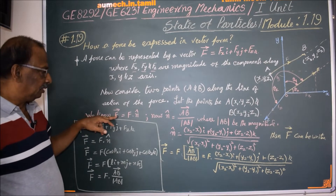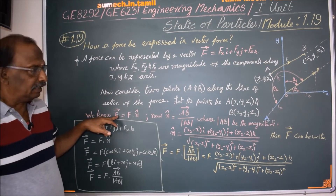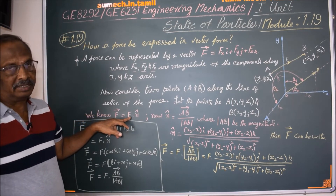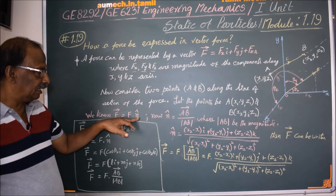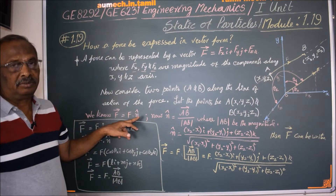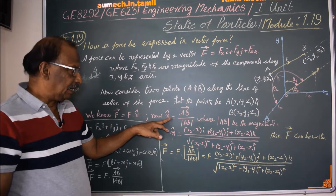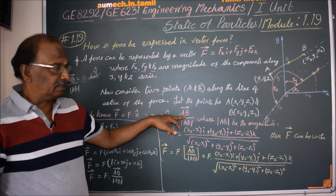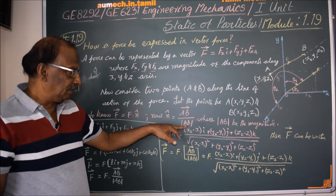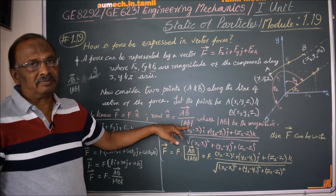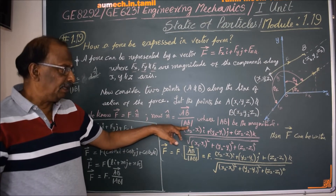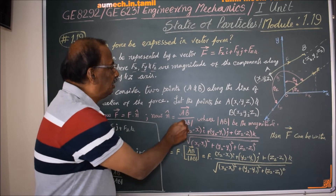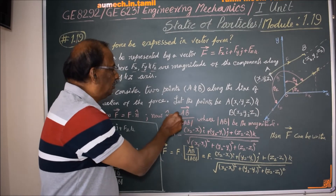With two points known, F equals the magnitude F into the direction. The unit vector n-cap equals the vector AB divided by the modulus of AB, where AB is the position vector between the two points and |AB| is its magnitude.